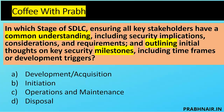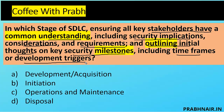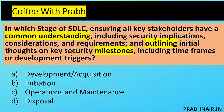Next question: In which stage of SDLC do we ensure all key stakeholders have a common understanding, including security implications and considerations, and outline initial thoughts on key milestones including timeframes? Keywords here are: stakeholders, implications, and milestones. Milestones are set as early as possible. Operation/Maintenance is where the application is launched; Development receives requirements. Milestones are defined in the initial stage — the answer is B, Initiation.